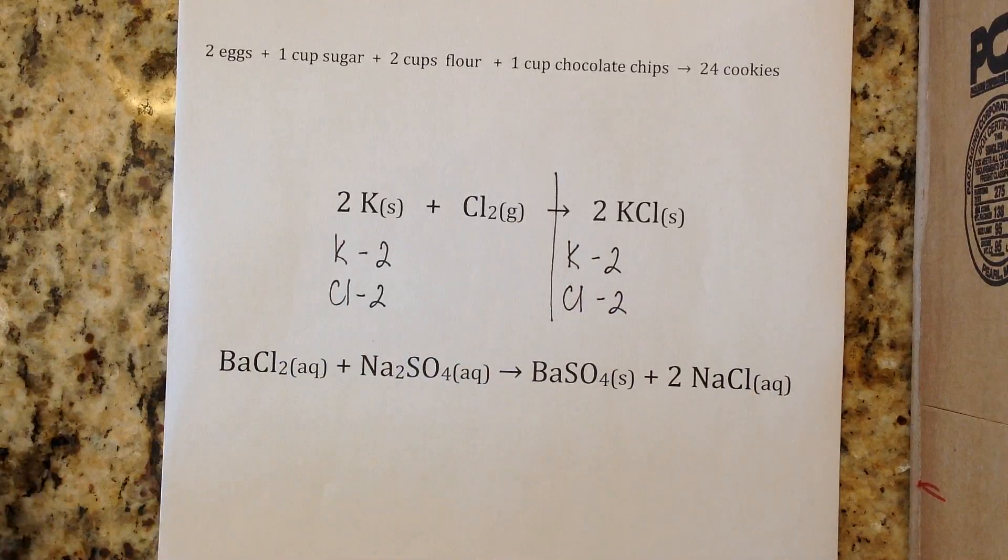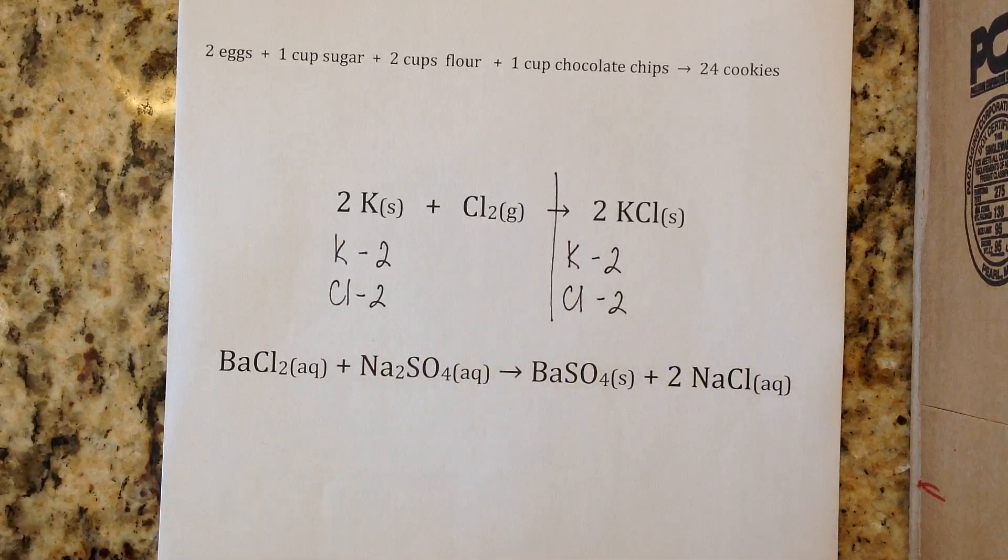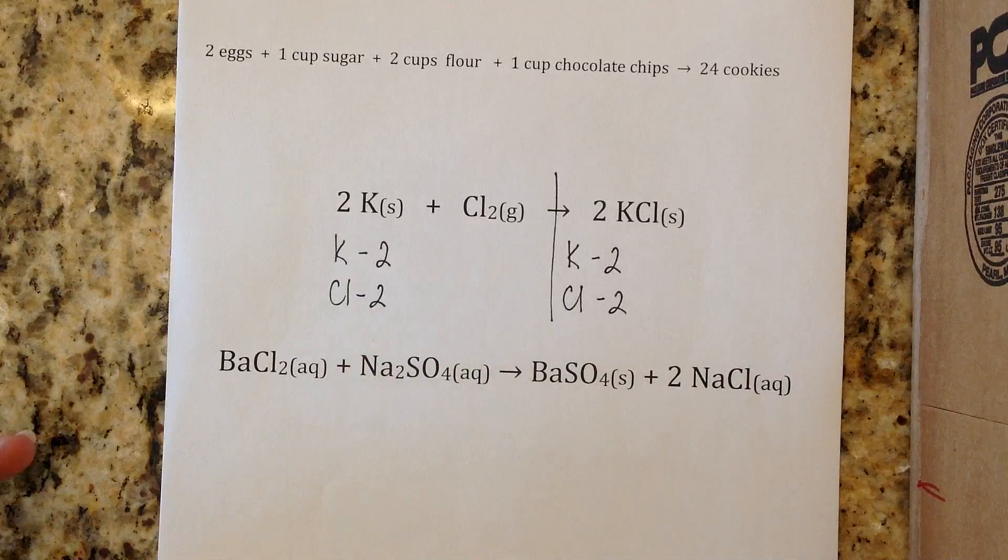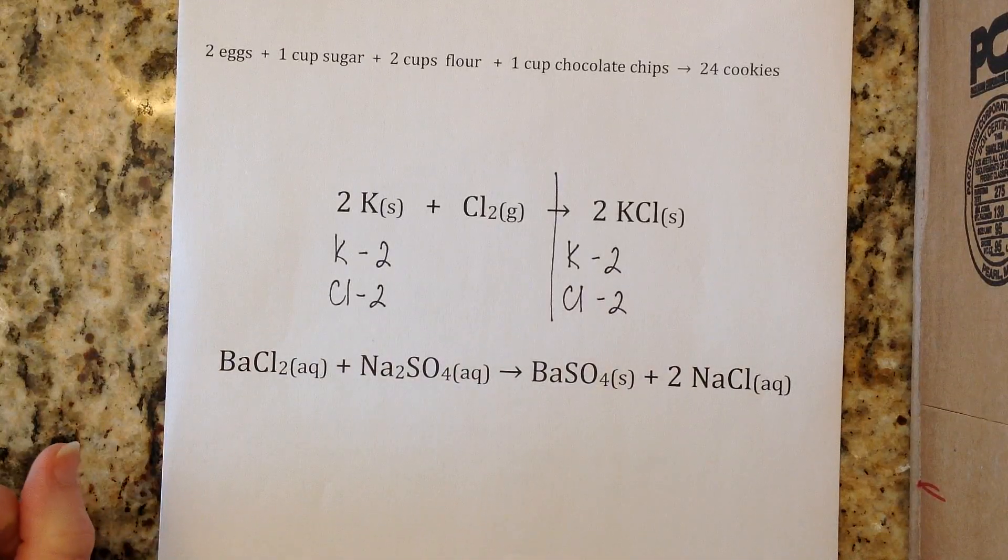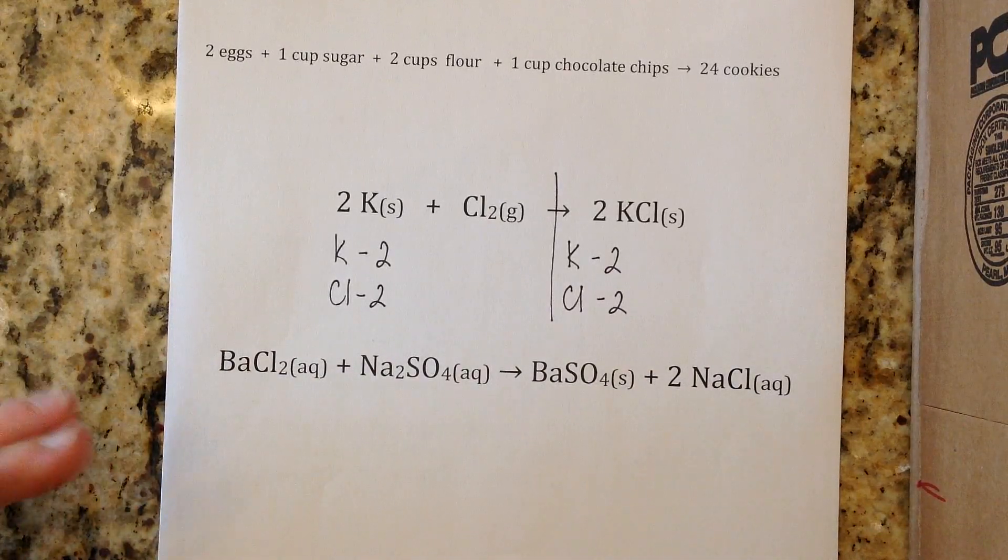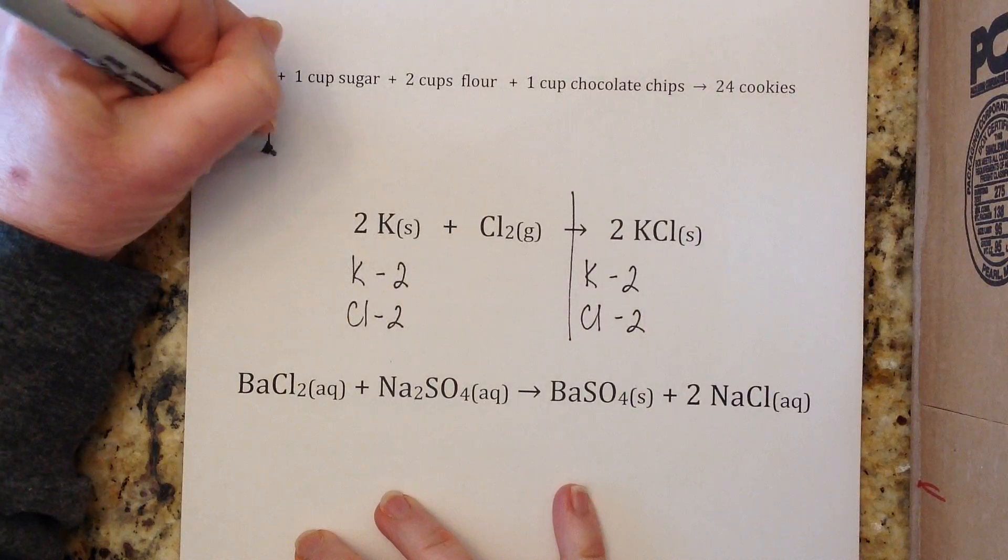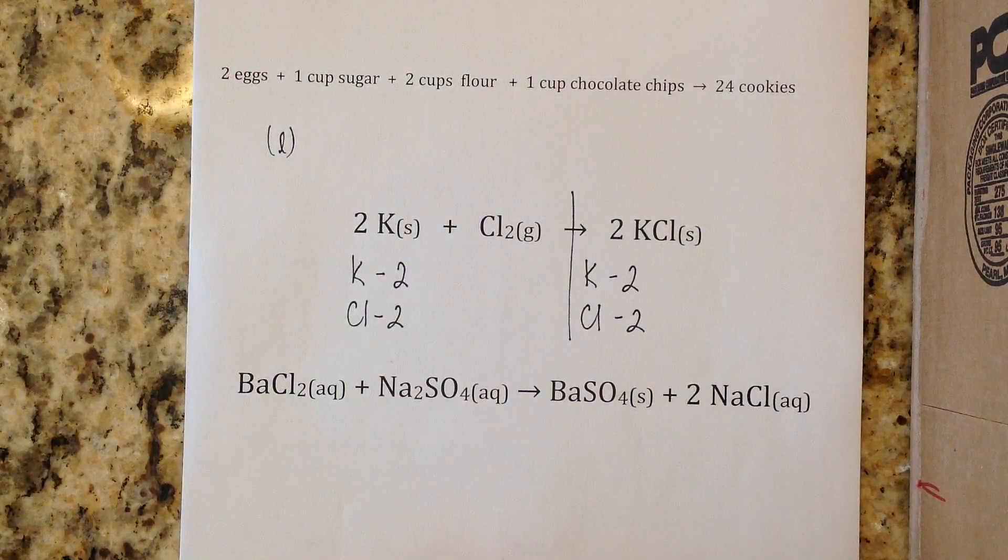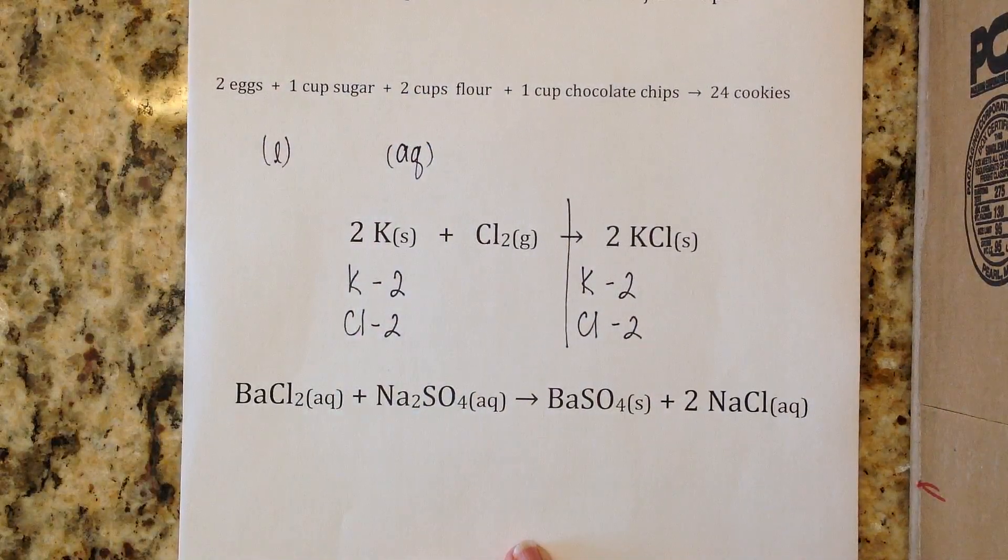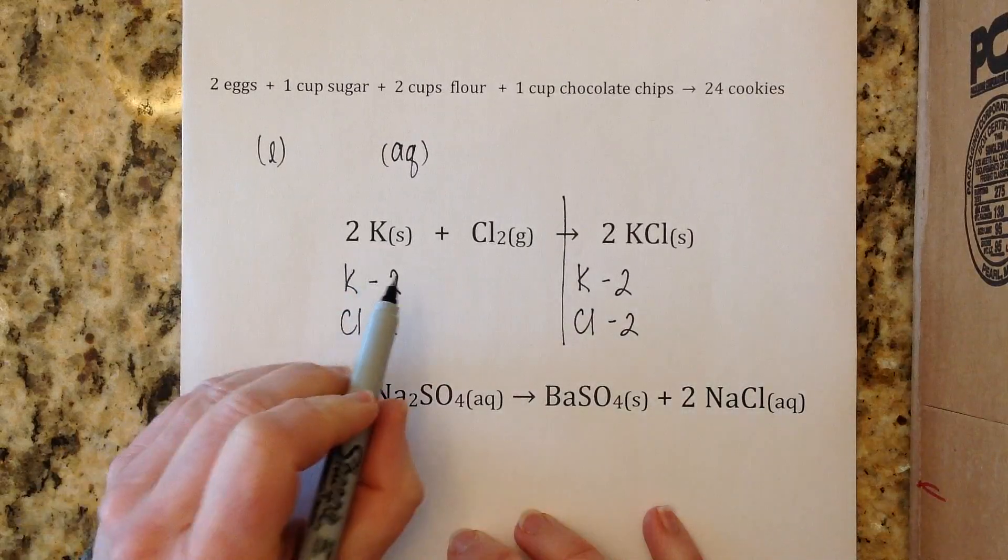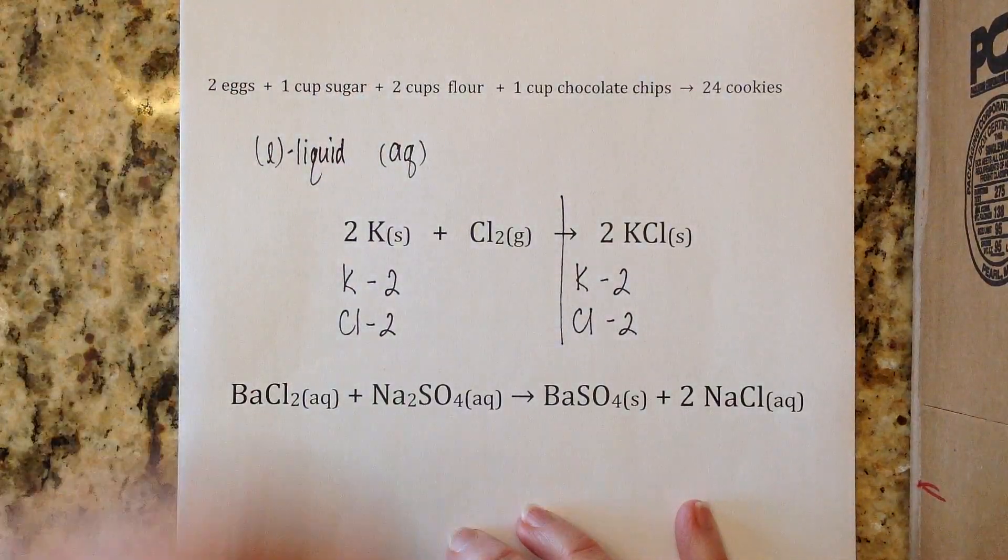Just like when you do a recipe, if it just said onion your question might be is it chopped, sliced, or whole. You need to know those things when you're doing a chemical reaction so you know what's going to work best. You may see l in parentheses for liquid, aq is aqueous meaning it's dissolved in water. The four symbols you will see would be liquid, aqueous, solid, and gas.